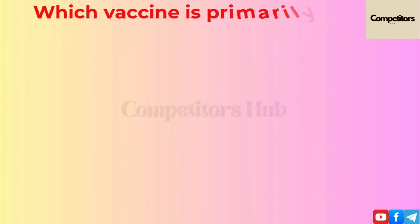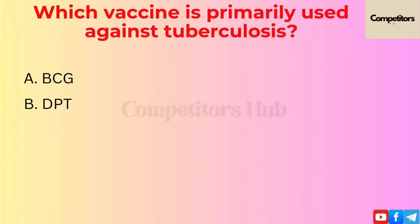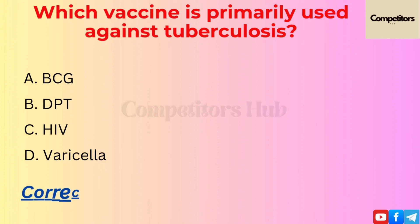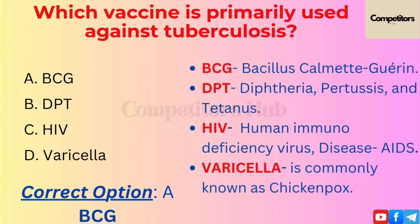The next question is: which vaccine is primarily used against tuberculosis? Option A: BCG. Option B: DPT. Option C: HIV. Option D: Varicella. The correct option is A, BCG.